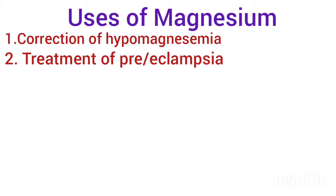The therapeutic uses of magnesium include: first, correction of hypomagnesemia; second, treatment of preeclampsia and eclampsia. Magnesium controls preeclampsia and eclampsia through systemic, vertebral, and uterine vessel dilatation via direct effects on the vessels, as well as by increasing endogenous vasodilators like endothelium-derived relaxing factor and calcitonin gene-related peptide.